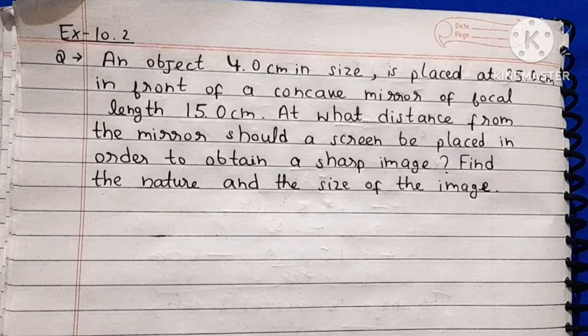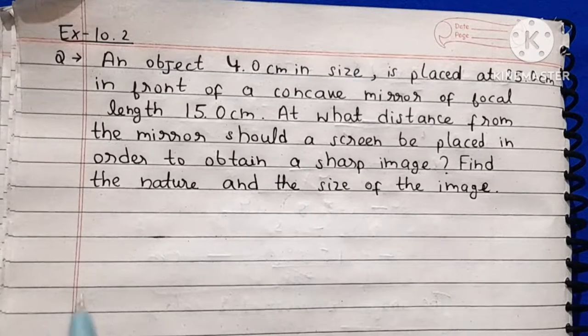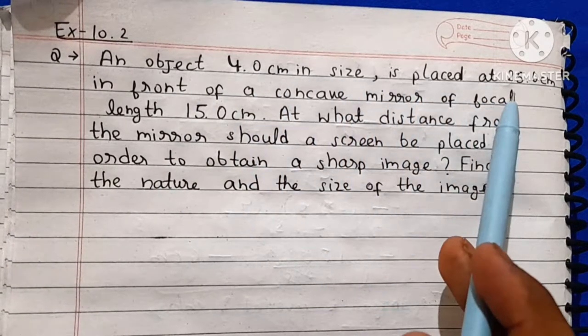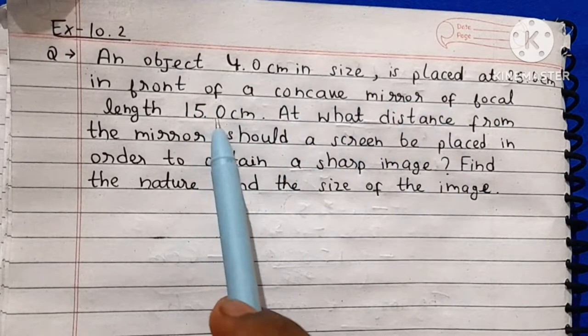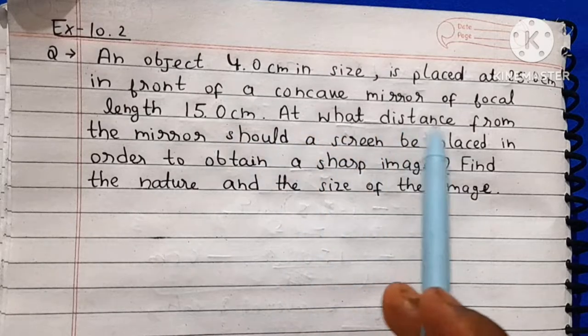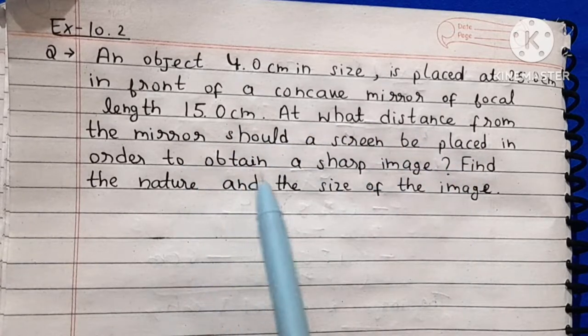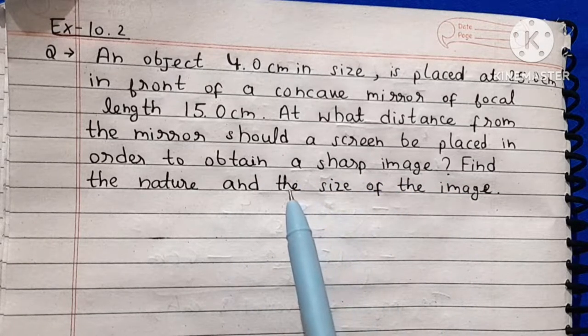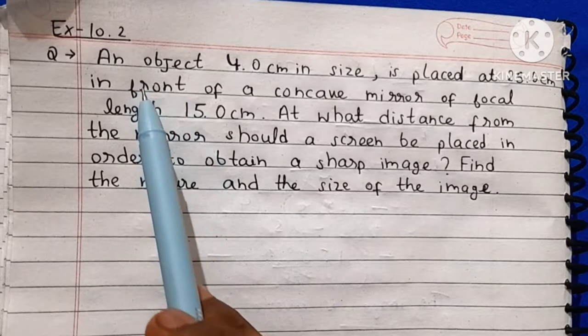Hello friends, welcome to my channel Fantastico Study. Today we are going to solve this question: An object 4 cm in size is placed at 25 cm in front of a concave mirror of focal length 15 cm. At what distance from the mirror should a screen be placed in order to obtain a sharp image? Find the nature and the size of the image. This is our Chapter 10 Light, Class 10th, Example 10.2.